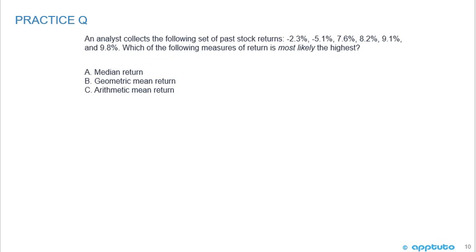A quick practice problem to check your knowledge. An analyst collects the following set of past stock returns: -2.3%, -5.1%, 7.6%, 8.2%, 9.1%, and 9.8%. Which of the following measures of return is most likely the highest: the median return, the geometric mean return, or the arithmetic mean return?